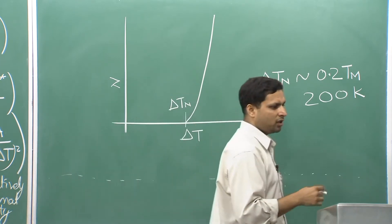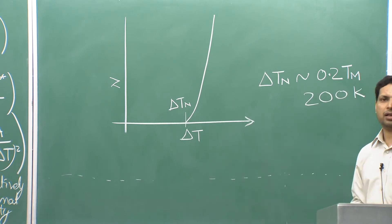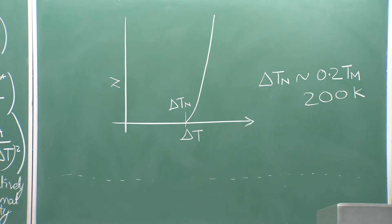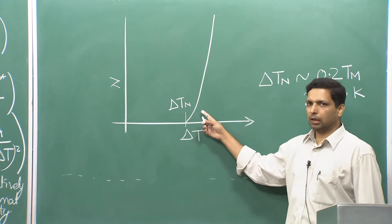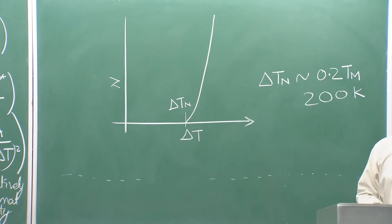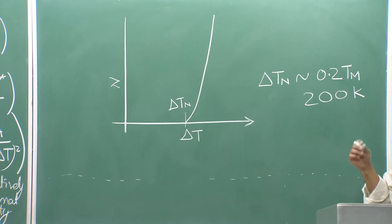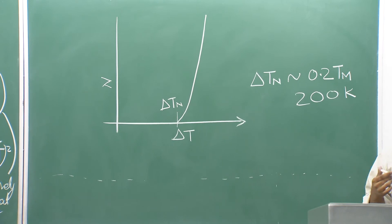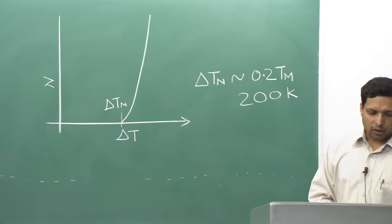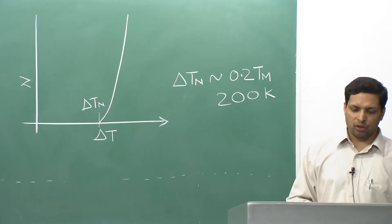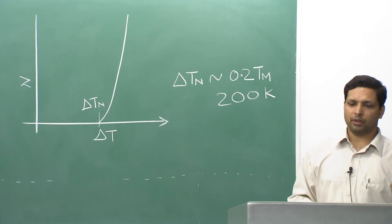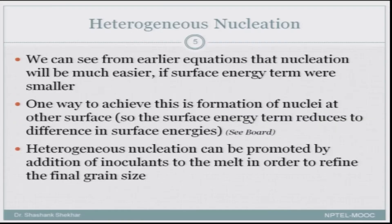For homogeneous nucleation, we require a very large undercooling before we see a large number of nuclei grow. In practice, homogeneous nucleation is not so common. And here we try to understand heterogeneous nucleation.